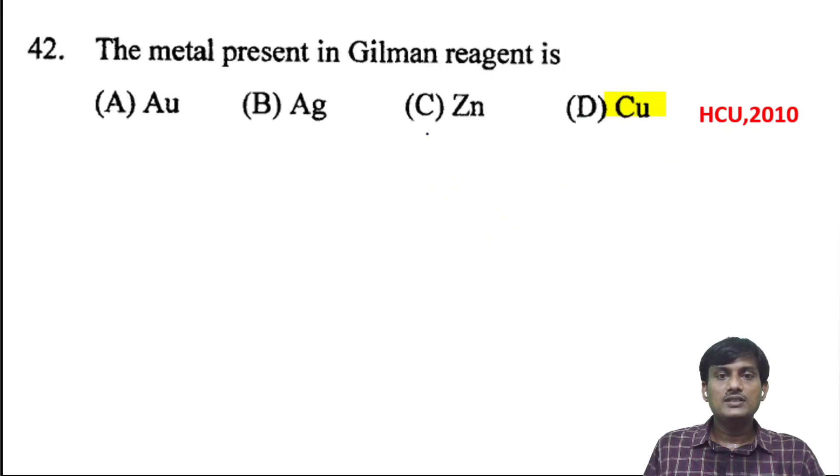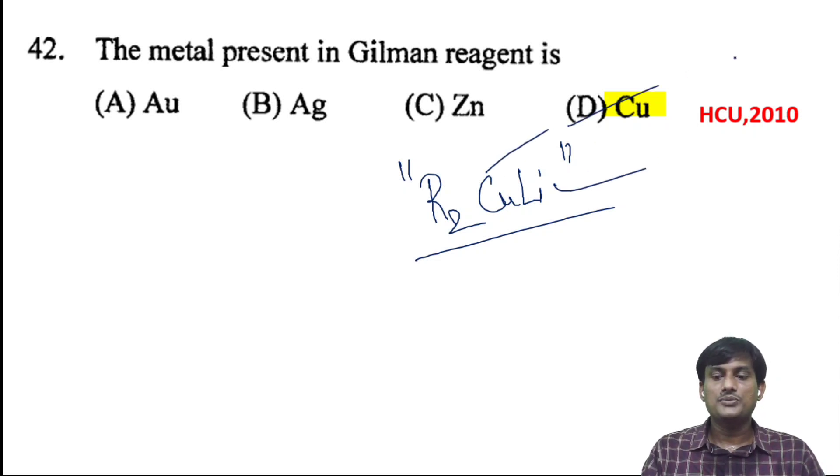The metal present in Gilman's reagent is R2CuLi. This one is called Gilman's reagent. In Gilman's reagent, we have copper and also lithium. So copper is the correct option.